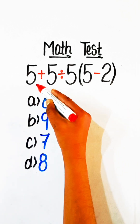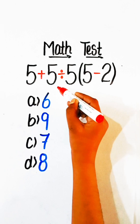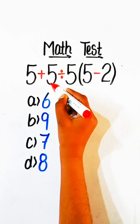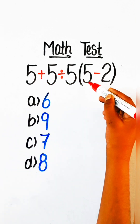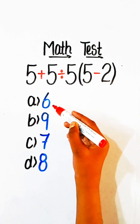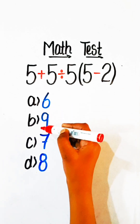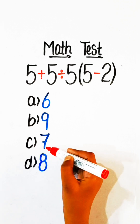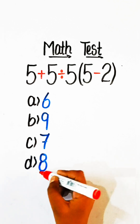Hello everyone, welcome to another math class. In this video we will solve this equation: 5 plus 5 divided by 5 under bracket 5 minus 2 equals what? Option A: 6, Option B: 9, Option C: 7, Option D: 8.